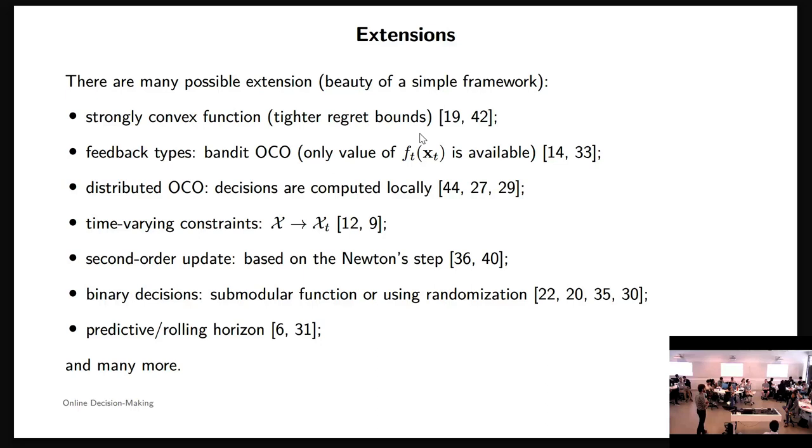We can have bandit feedback, so that would be the case where I only get, if I look at the board, the value of f_t(x_t). I won't get S_T, I won't get P_T. It's just the value at x. What can I do with that? Turns out I can still get along. Distributed OCO, so we want local decisions to be computed locally. Time-varying constraint, so this curly X becomes curly X_T. We can have second-order updates. So that's part of the research work I'm doing. Binary decision-making. That's another example I prepared. We have time. We decide, I mean, we have to use in the title of the framework convex, indeed. But many decisions are actually binary.